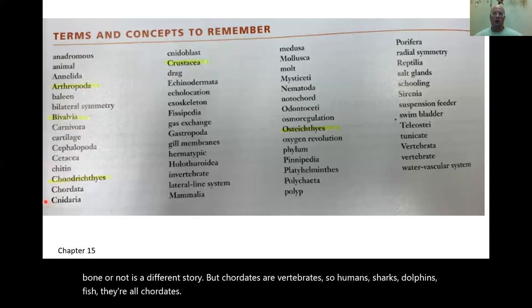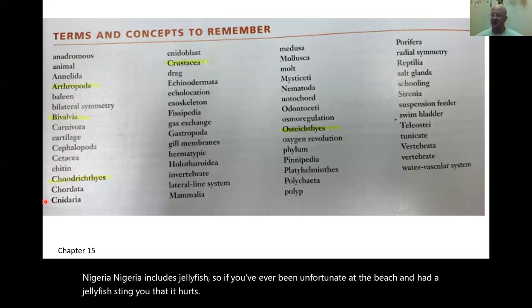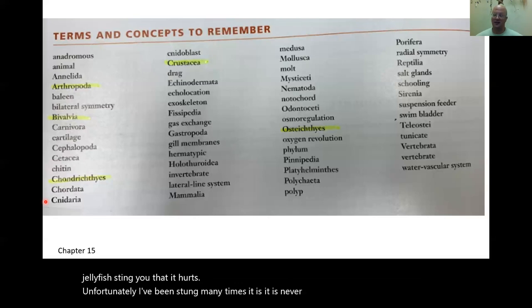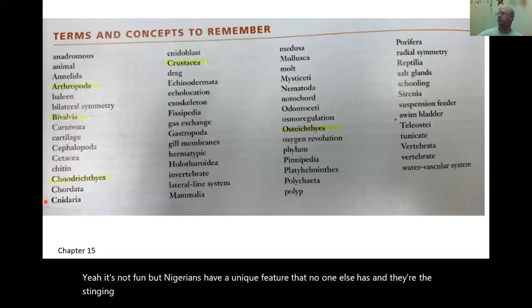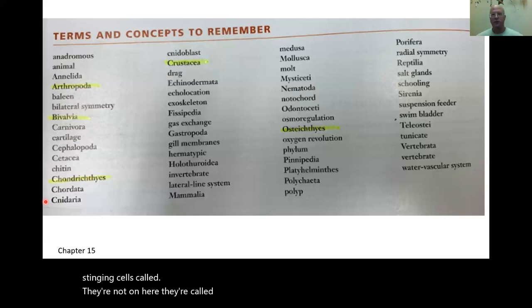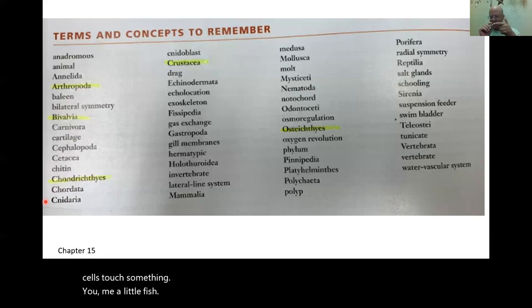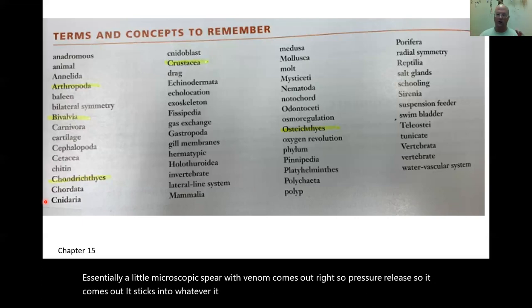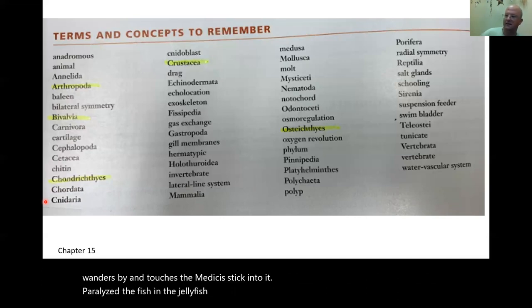Cnidaria includes jellyfish. If you've ever been stung by a jellyfish at the beach, you know it hurts. Cnidarians have a unique feature no one else has: stinging cells called nematocysts. These are special cells found only in cnidarians — when they touch something, a microscopic spear with venom is released under pressure. If a jellyfish is floating around and a fish touches the tentacle, nematocysts paralyze the fish so the jellyfish can eat it.